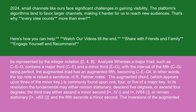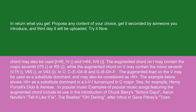H.R. Palmer notes the augmented chord, which appears upon three of the minor key, is commonly found upon one, four, or five of a major key. In its resolution, the fundamental may either remain stationary, descend five degrees, or ascend four degrees. The third may either ascend a minor second (I+ to I+6/4) or remain stationary (I+ to I6). The augmented chord on I may contain the major seventh (I7/5 or I6/5), while the augmented chord on V may contain the minor seventh (V7/5, V6/5, or V4/3).